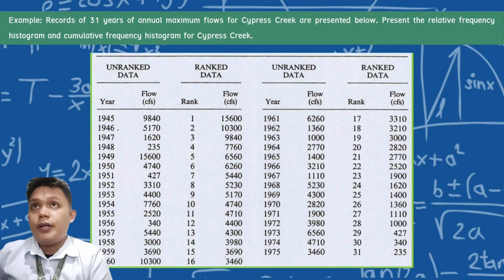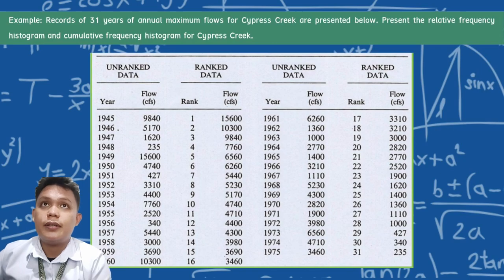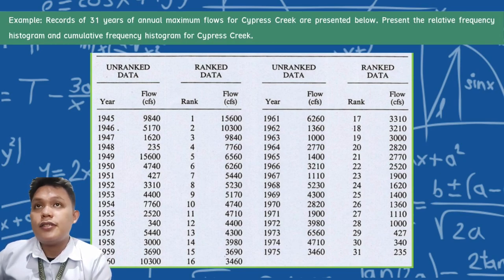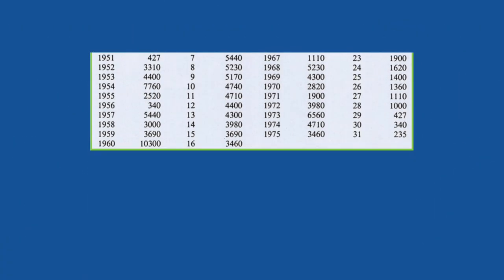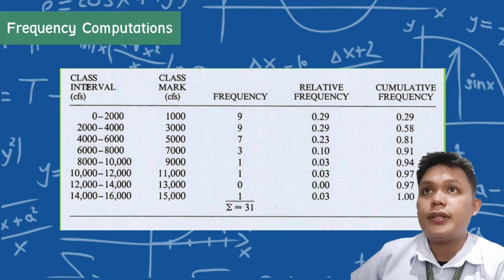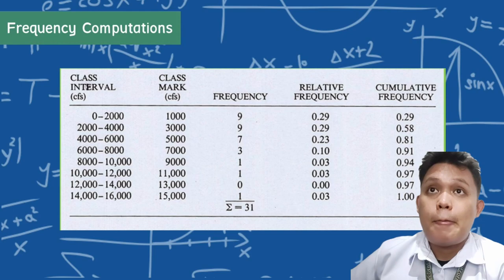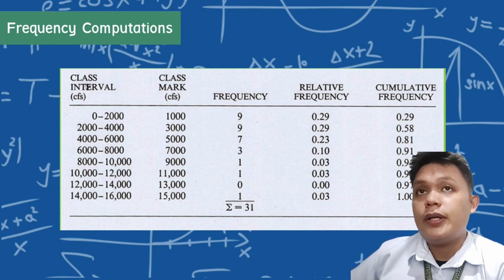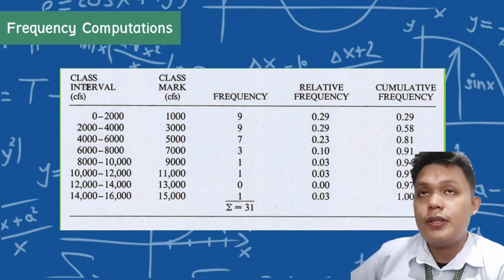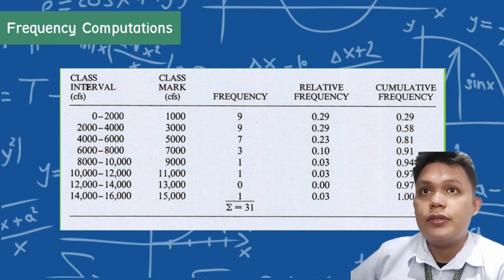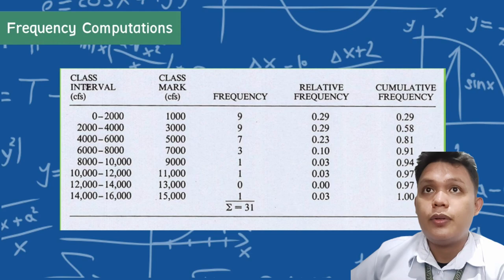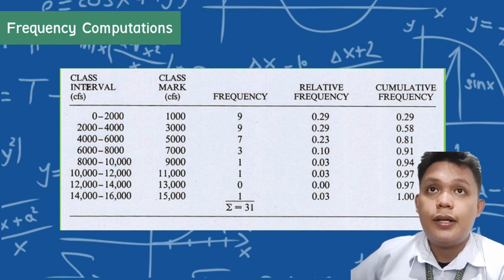Here is a record of 31 years of annual maximum flows for Cypress Creek from 1945 to 1975, ranked from the highest to the lowest flow value. In the frequency computation, we are given the class interval, class mark, and frequency. To get the relative frequency, sum all the frequencies — 9 plus 7 plus 3 plus 1 plus 1 plus 0 plus 1 equals 31. The relative frequency of 9 is 9 divided by 31 equals 0.29; 7 divided by 31 equals 0.23; and so on.